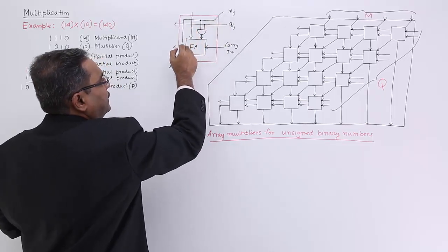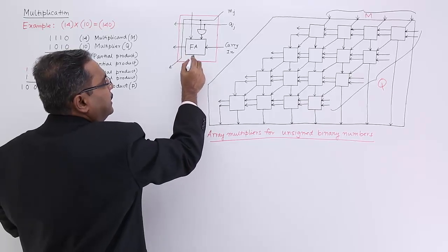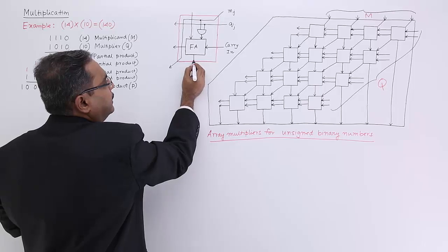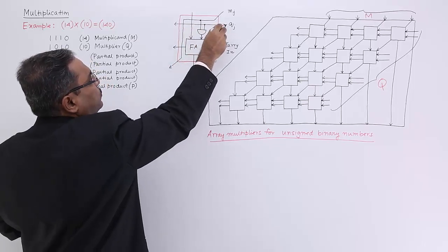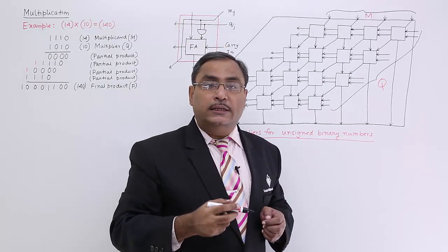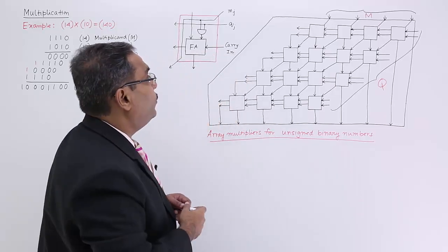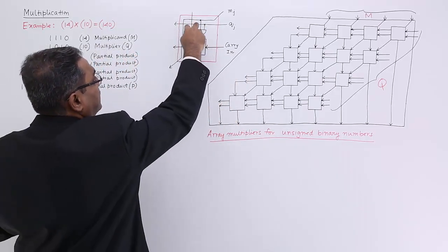This mj is going out here. This is the carry bit going out there. This is the sum bit going out there. And then this qj is going out there because qj is to be multiplied with the other mj. That's why it's going out there.